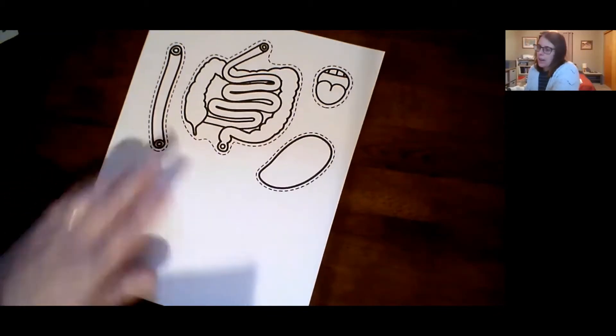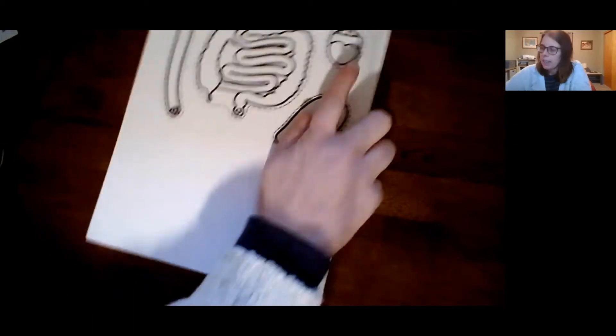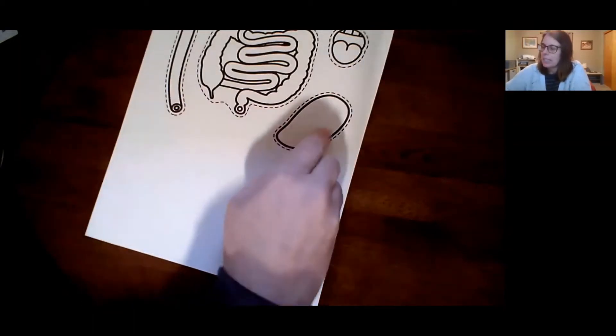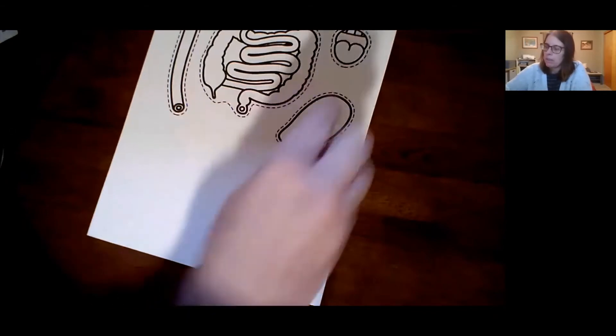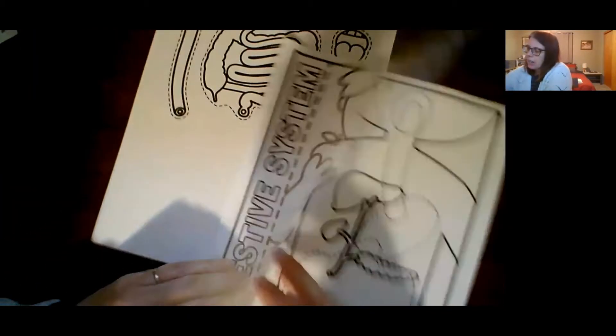So these are the different parts of the digestive system. You can see that's the mouth, the esophagus, the stomach, and then here's the small and large intestines. So let's look at our little book.